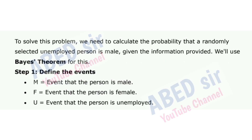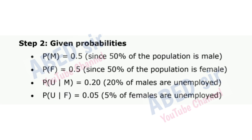To solve this problem, we need to calculate the probability that a randomly selected unemployed person is male, given the information provided. We'll use Bayes' theorem for this. Step 1: Define the events. M = event that the person is male, F = event that the person is female, U = event that the person is unemployed.